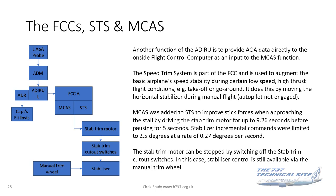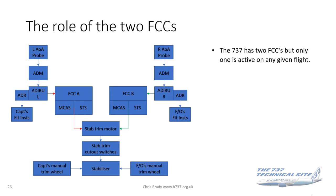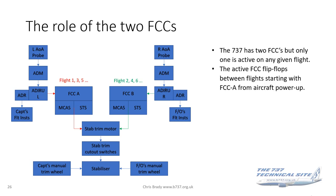Stabilizer incremental commands are limited to 2.5 degrees at a rate of 0.27 degrees per second — if you divide 0.27 into 2.5 degrees, that's where you get the 9.2 seconds from. The stab trim motor can be stopped by switching off the stab trim cutout switches; in that case, stabilizer control is still available via the manual trim wheel. There are two flight control computers on the 737, but only one is active on any given flight.